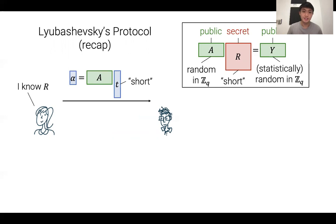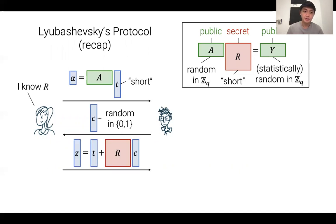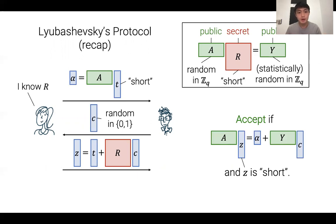The prover first samples a short vector T, left-multiplies by A to compute the commitment alpha, and sends it over. Next, the verifier samples a short challenge vector — for simplicity, entries are random in {0,1}. Finally, the prover computes Z = T + R·C, exploiting knowledge of R, and sends Z. The verifier checks that A·Z equals alpha + Y·C and that Z is short. This check passes when the prover follows the protocol correctly, since T, R, and C are all short, and the linear relation holds.